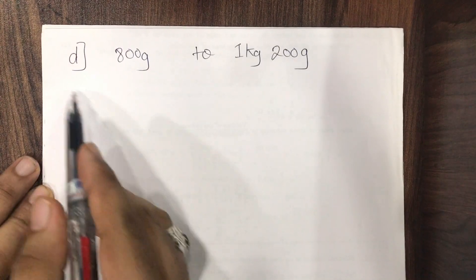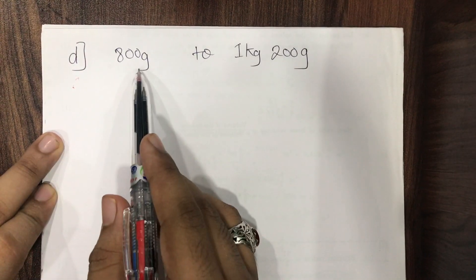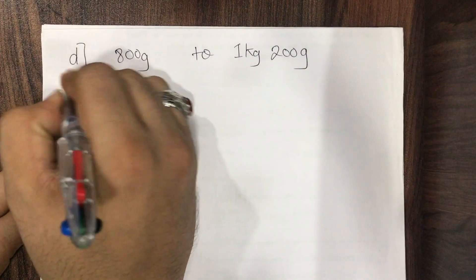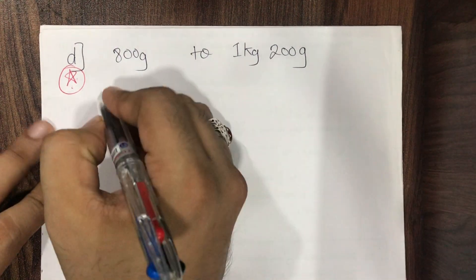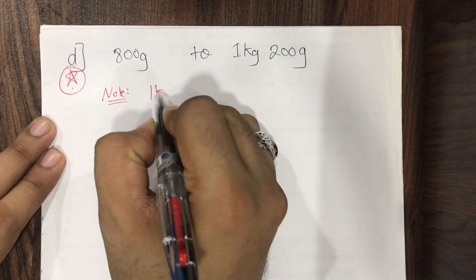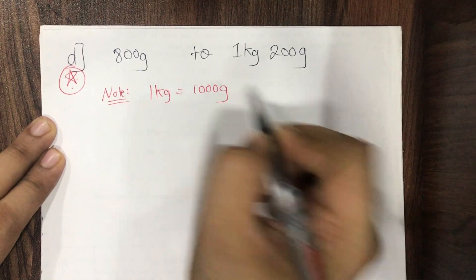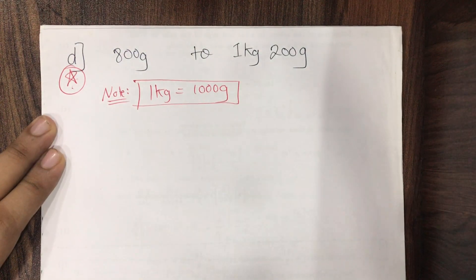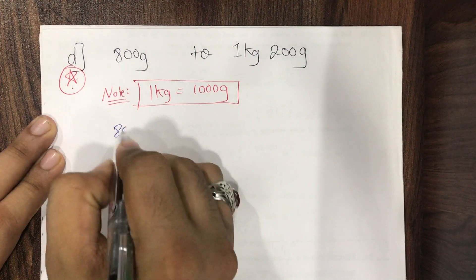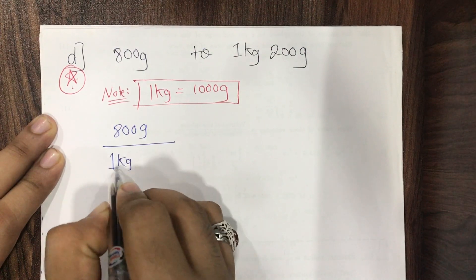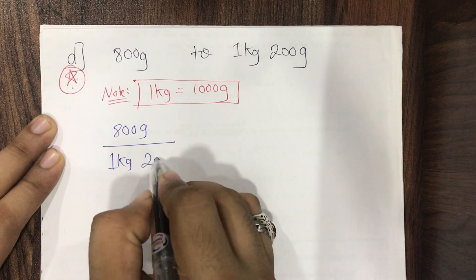Now sub-question D: 800 grams to 1 kg 200 grams. This is an important question. Before starting, note that 1 kg = 1000 grams. Now I write: 800 grams upon 1 kg 200 grams.